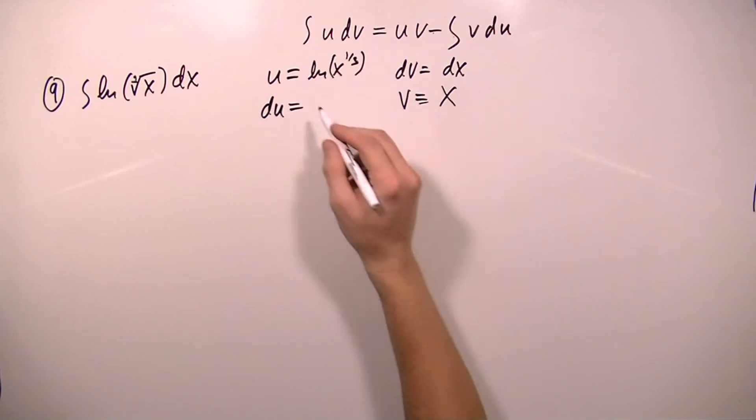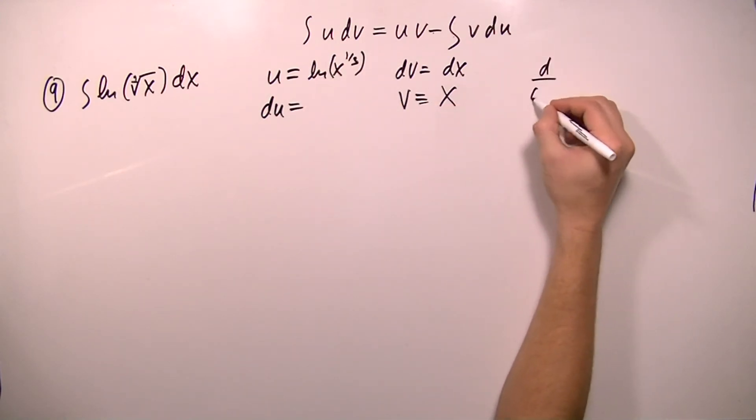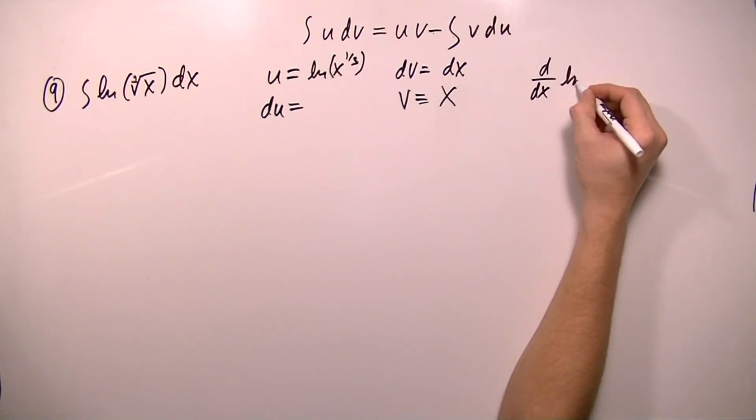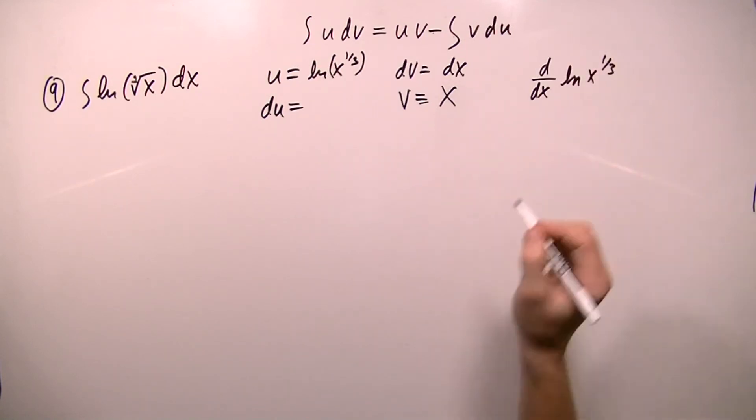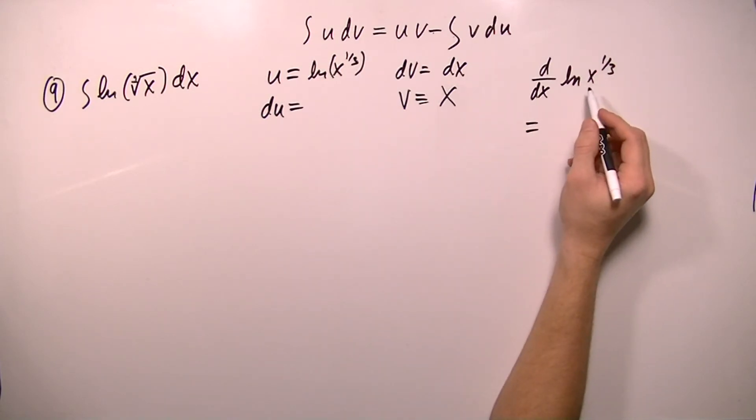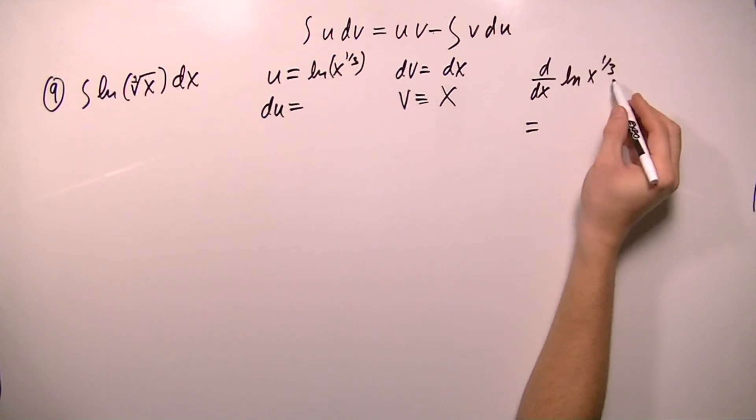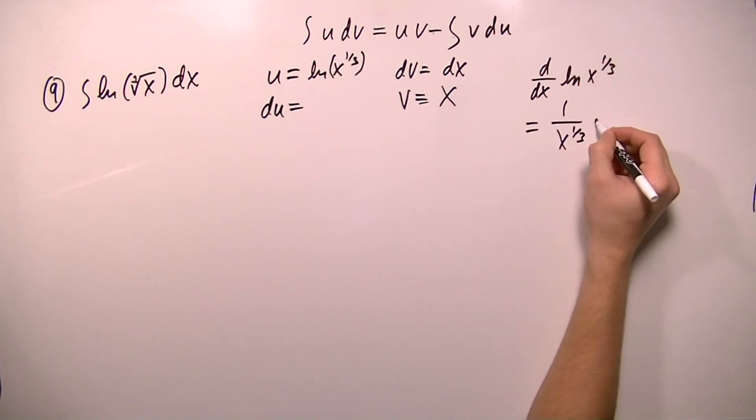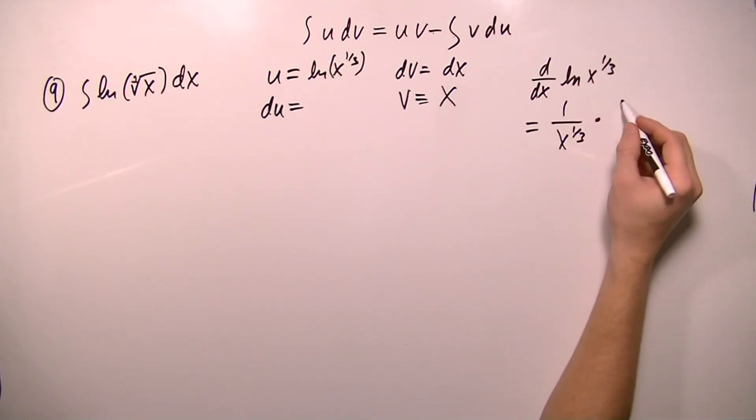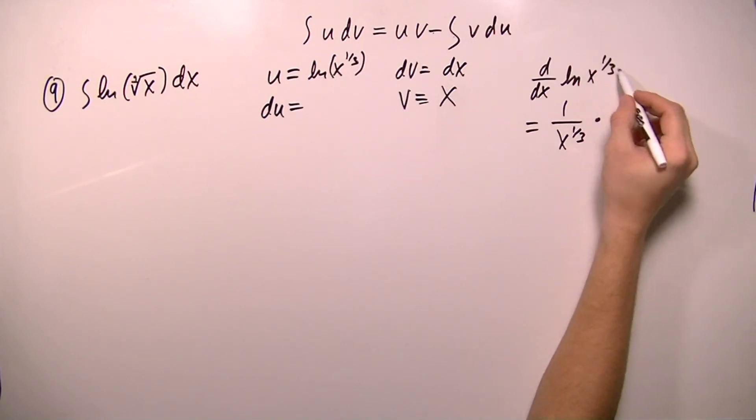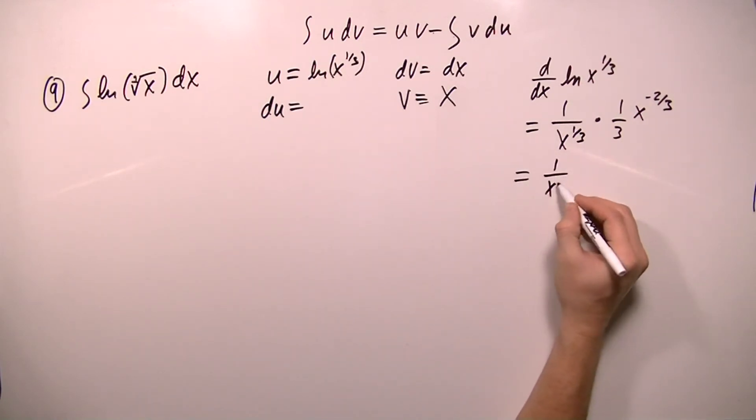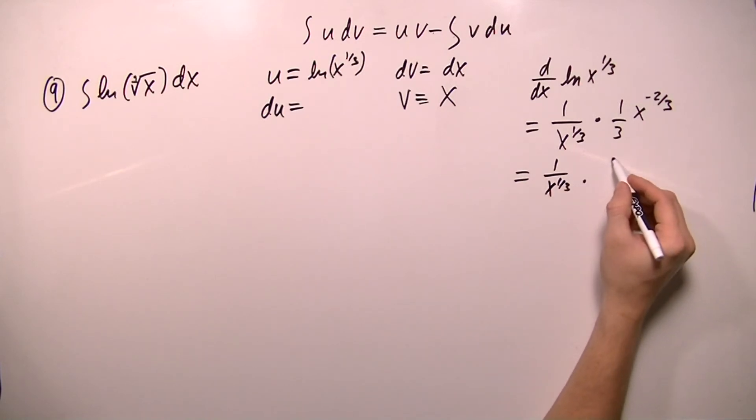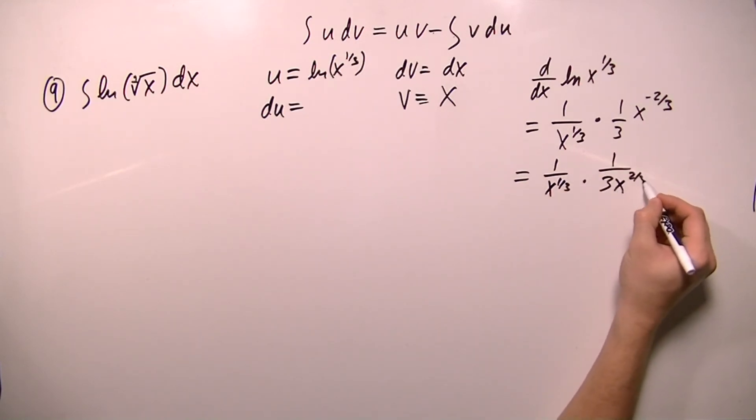And then to find the derivative, I'm going to write here d dx, which means take the derivative of ln x to the 1 third. And in order to do this I'm going to have to use the chain rule. I'm going to take the derivative of the outside, which means I put 1 over the argument, x to the 1 third. And then I multiply by the derivative of the inside. So I take the 1 third down, x, and then I subtract 1 from the exponent, which gives me negative 2 thirds. So I'm going to rewrite this as 1 over x to the 1 third times 1 over 3x to the 2 thirds. I wrote this down into this denominator and made the exponent positive.